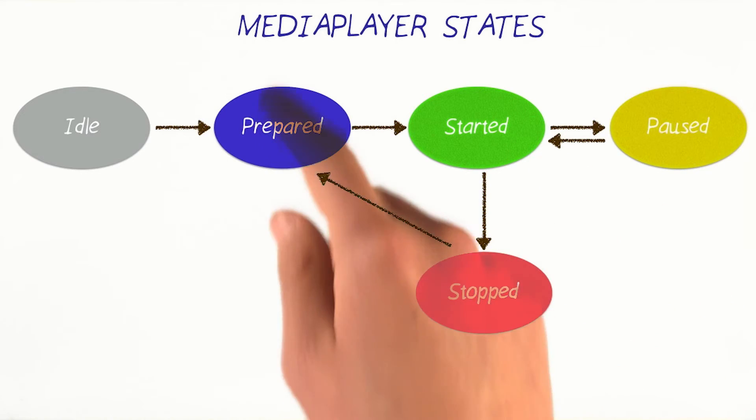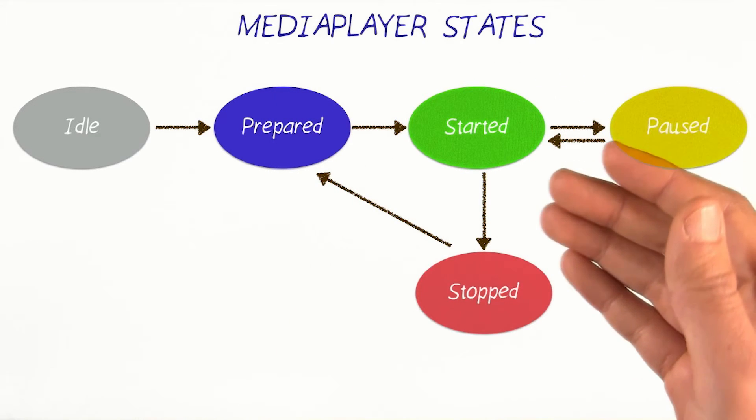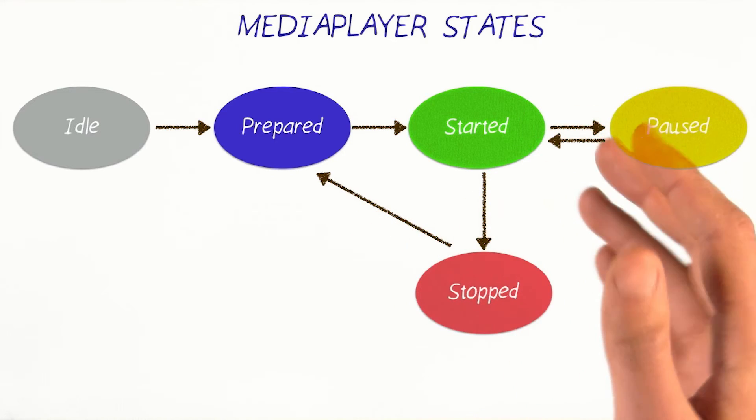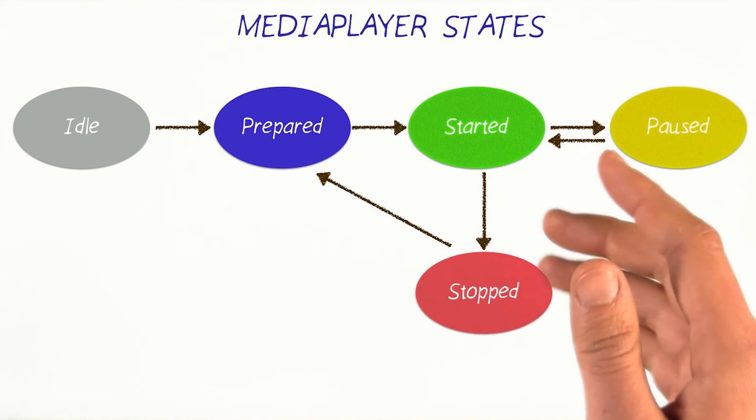As you can see, there are a number of different states to the media player, used to control how audio is played back to the user. And again, this is referred to as a state machine diagram.